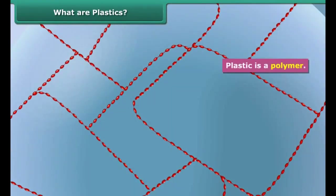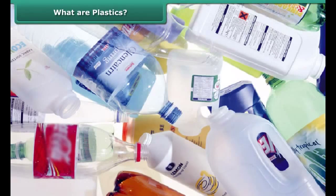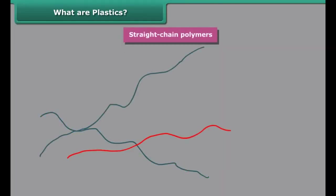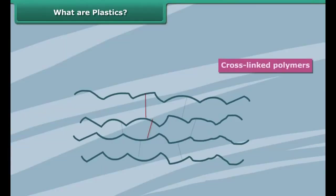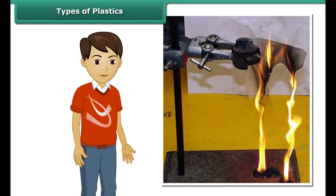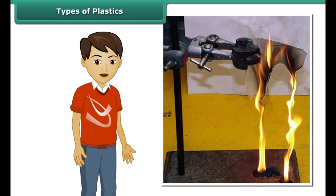We get the name plastics because of their properties to be moulded, cast or processed into a variety of forms. It is chemically obtained mostly by synthesis of petroleum and natural gas. Like synthetic fibres, plastic is also a polymer that is made by joining many small similar units.